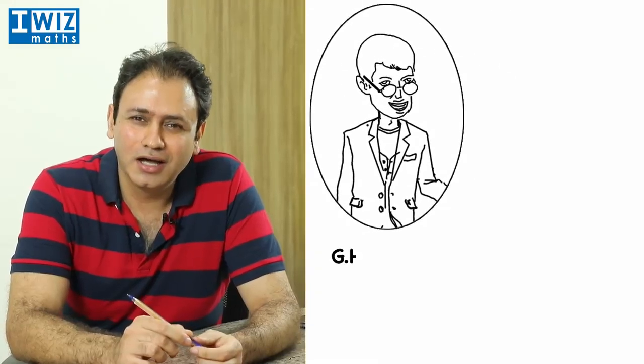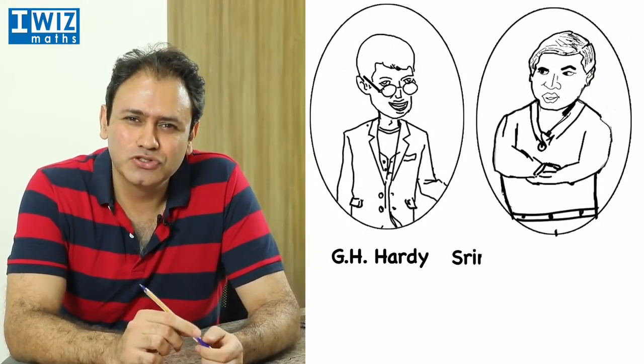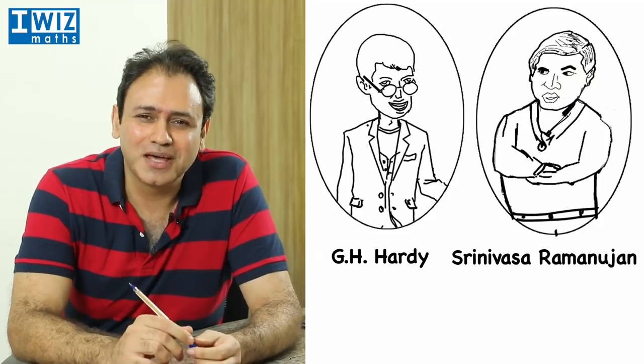So I'll tell you a true story. This is a story about two mathematicians. One was G.H. Hardy, an Englishman, and the other was Srinivas Ramanujan, a very famous Indian mathematician.